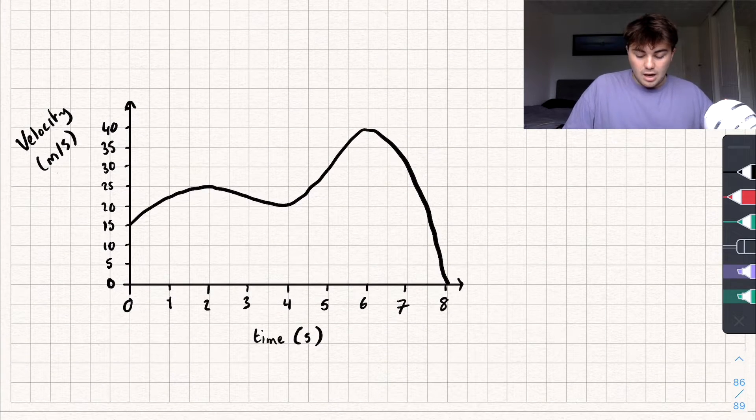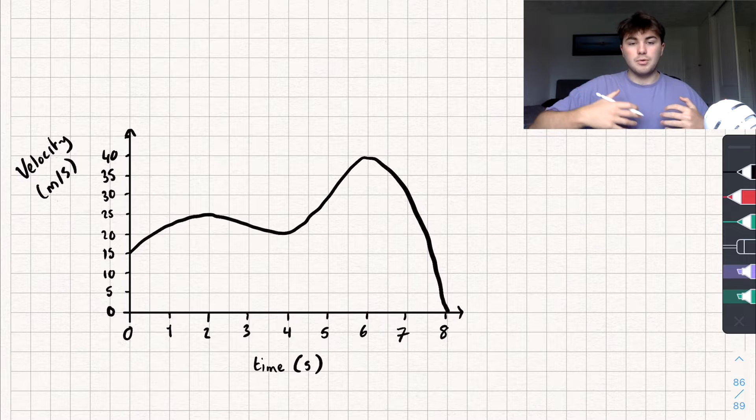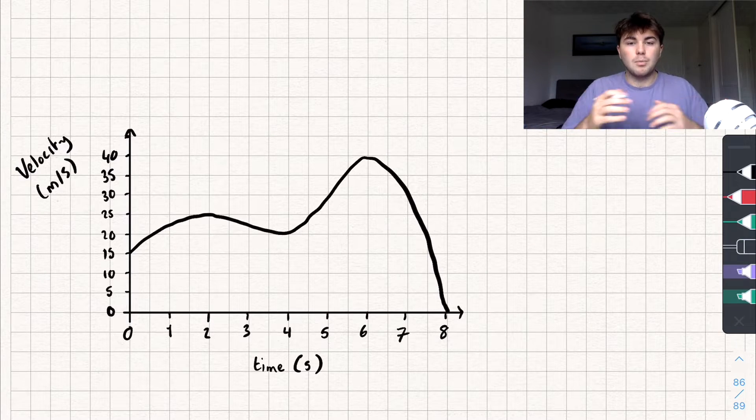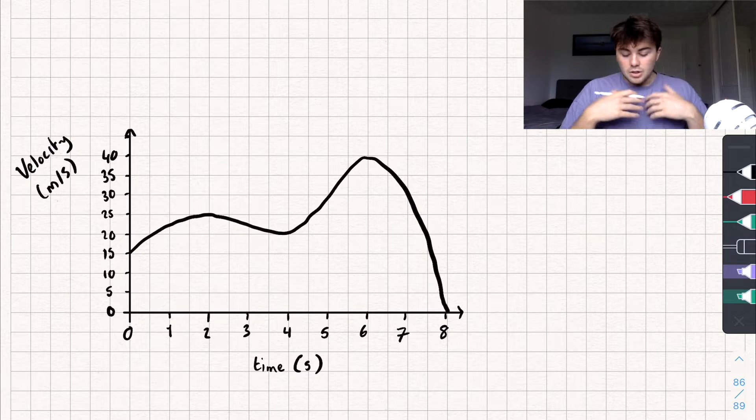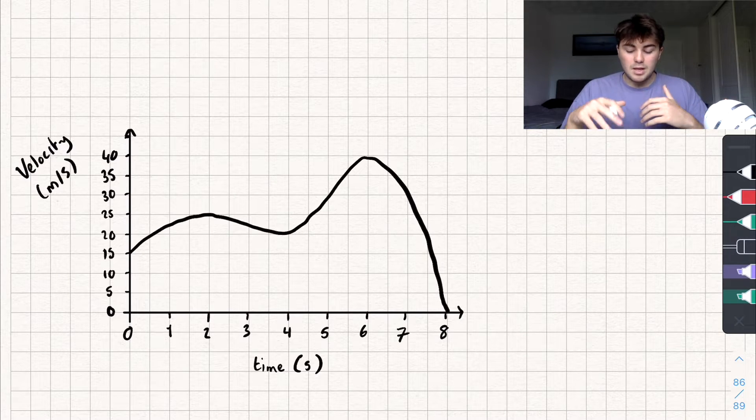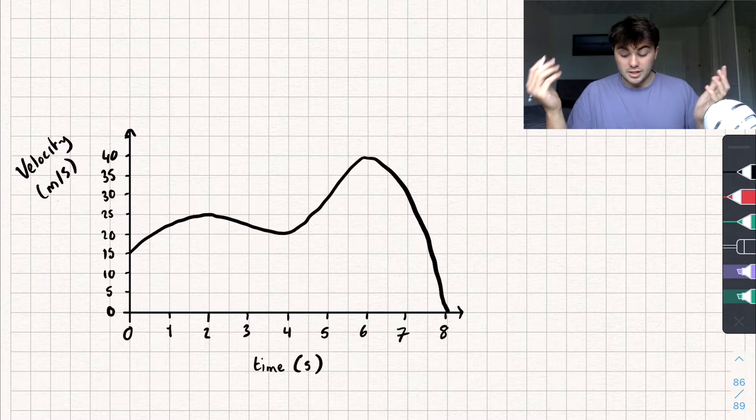Sometimes though, you're going to get kind of a worse graph, which isn't a line. It's going to be a curve that represents the velocity time. It's not much harder, but instead of finding the actual area under the curve, we have to estimate it. So a question might say, split this up into four equal strips and estimate the gradient. Well, let's do it.